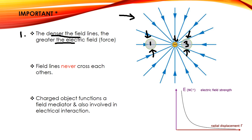Rule number two: field lines never cross each other. If you are drawing field lines in an exam, do not cross them — that would be incorrect. Rule number three: a charged particle has two functions — it is a field mediator (it emits a field) and it is also involved in electrical interaction.